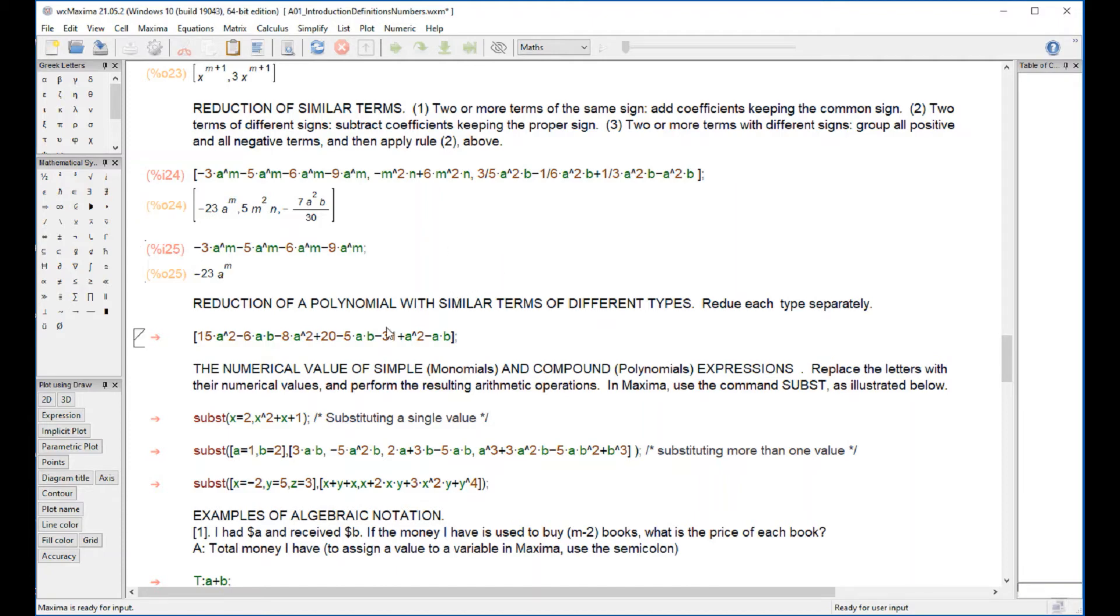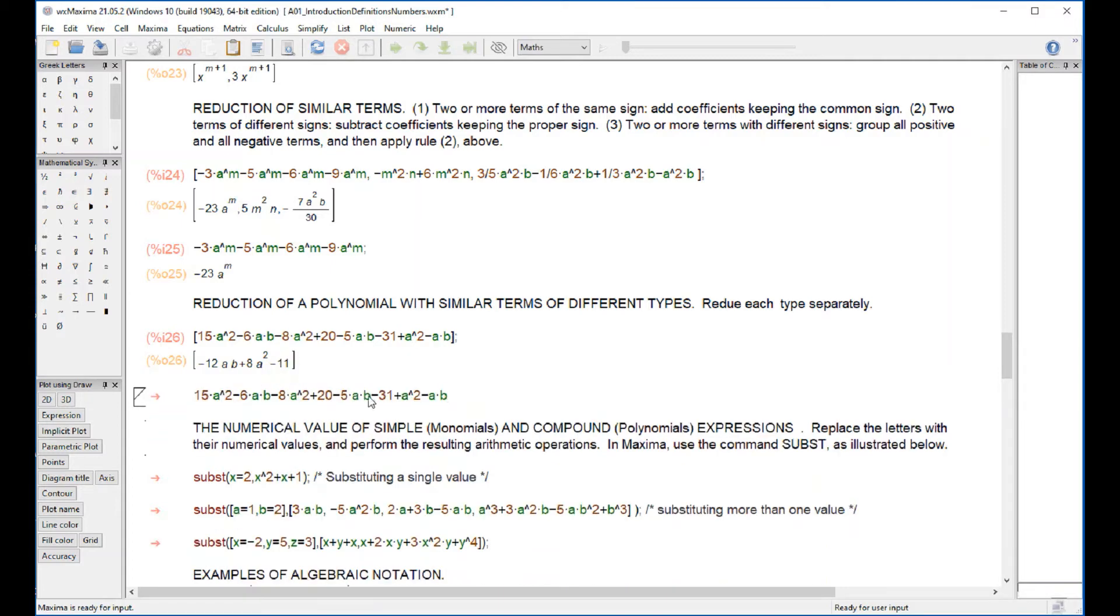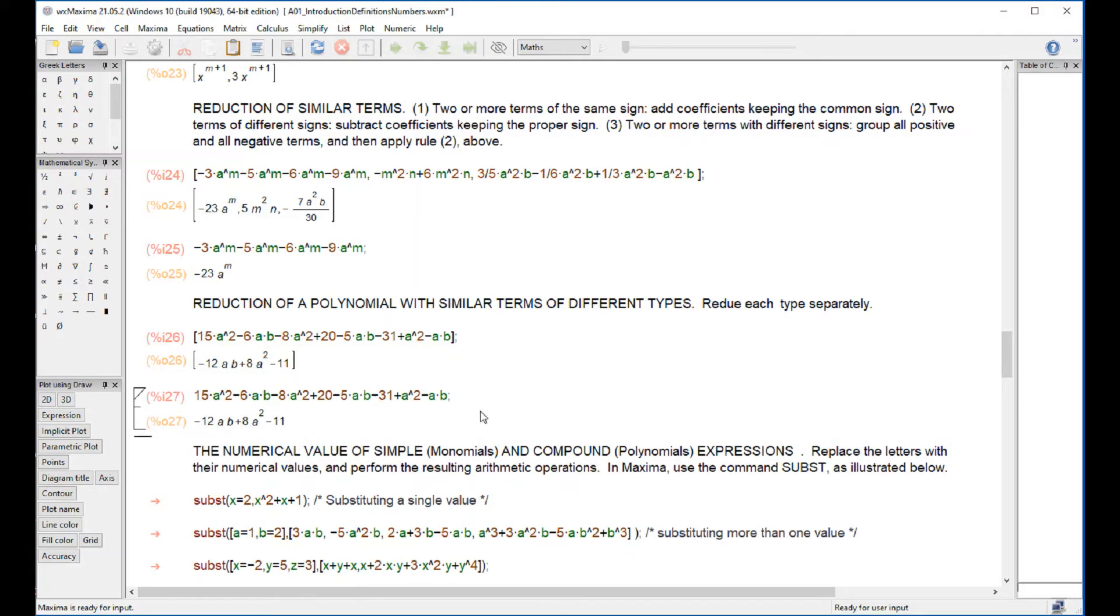Reduction of polynomial with similar terms of different types is basically just collecting. I'm going to copy this to show you what this polynomial will look like. It actually does the collection itself. So terms like a² multiplied by 15 and this -a² and this a² will all be combined into 8a², and independent terms like 20 and these give you -11. You can check on those on your own.